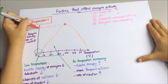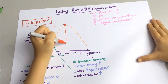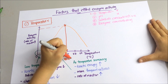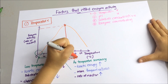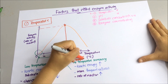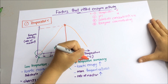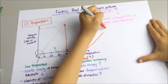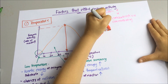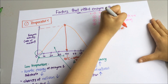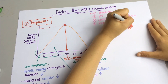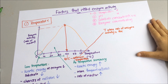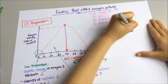Therefore, the rate of reaction is higher. In the exam, they will also ask you to state the optimum temperature. Find the highest point on the curve and plot it down against the x-axis — this will be your optimum temperature. Optimum temperature is the temperature where the rate of enzyme activity is the highest. For humans, the optimum temperature is 37 degrees Celsius.